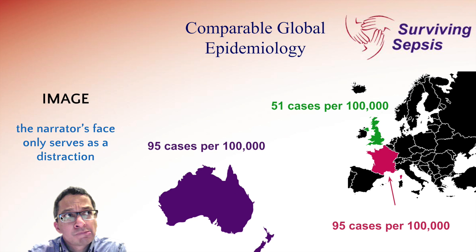The image principle says my face adds nothing to the slide. Often we put a picture of the person talking in the corner, but all that does is serve as a distraction — the viewer looks at the content, then at the person, then the content, then the person. That back and forth just adds cognitive load we don't need. So get rid of that face.